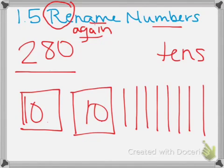So we have 10, 20, 21, 22, 23, 24, 25, 26, 27, 28. This number, named again,